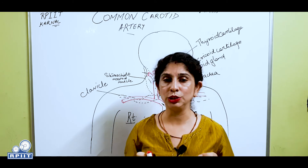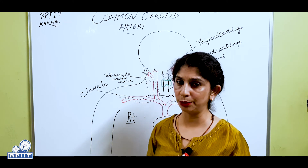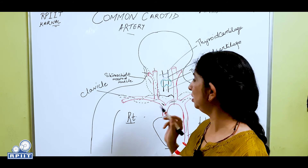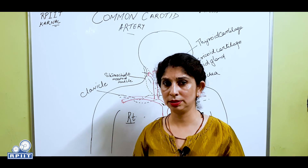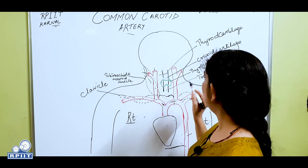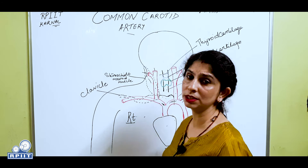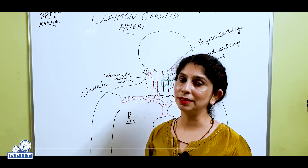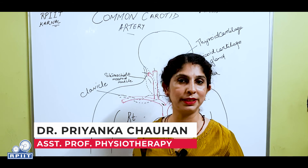The internal carotid artery goes directly into the brain to supply it, which is why it is called the internal carotid artery. The external carotid artery does not enter the skull cavity. That is all about the common carotid artery — I hope this video will be helpful. Please like the video and subscribe to the channel, RPIT Academics.